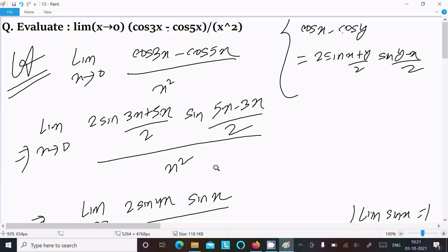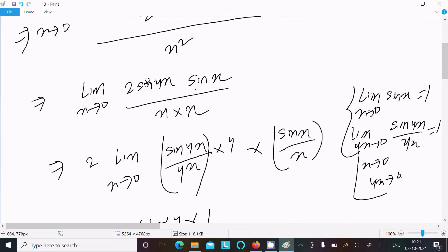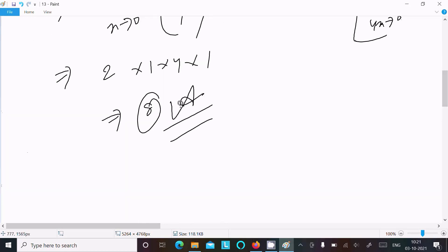And do the calculation. Here you can get this term sin 4x, so for that we need to make sin 4x by 4x, here sin x by x. And after doing the calculation, you get 8. This is the way we can find the limit of this question.